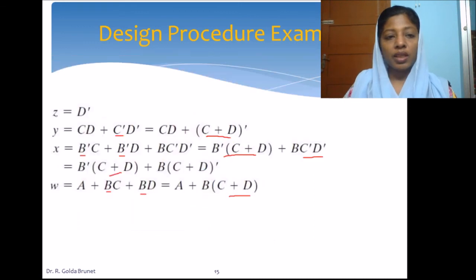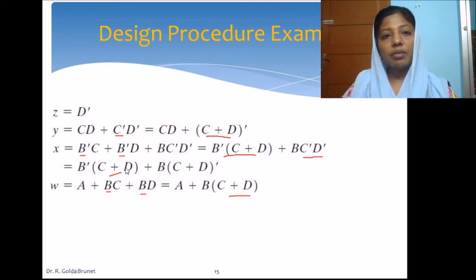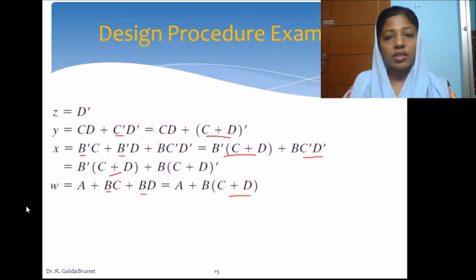If we analyze the equations together, each of the output variables has a simplified expression independently. But since all four variables are output functions of the same circuit, we can analyze them together to further minimize the number of gates involved in the design. It is not always ensured that we will be able to minimize the gates when we compare the output functions together, but it is better to check whether we are able to reduce the gates further.